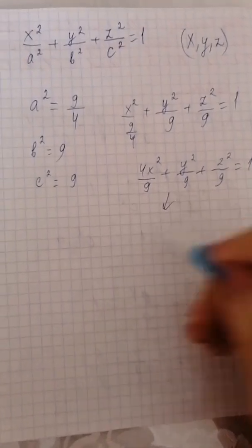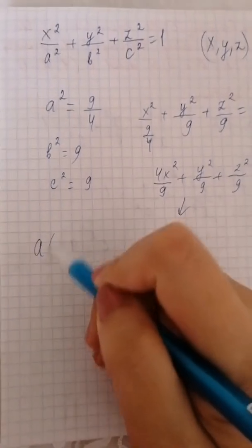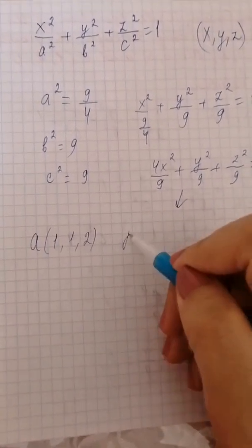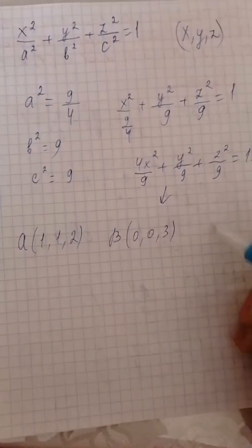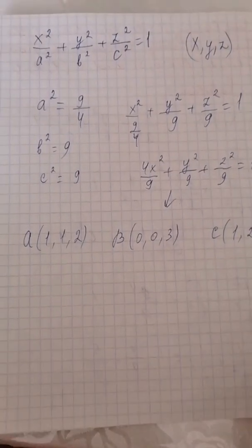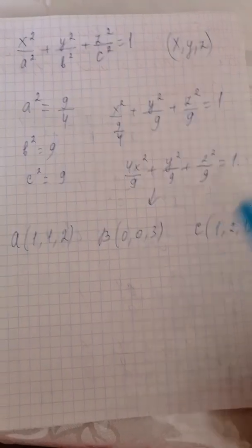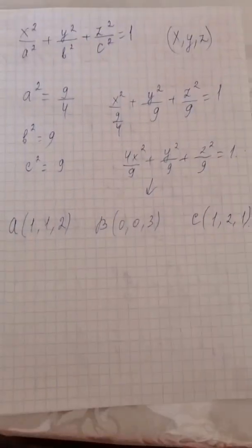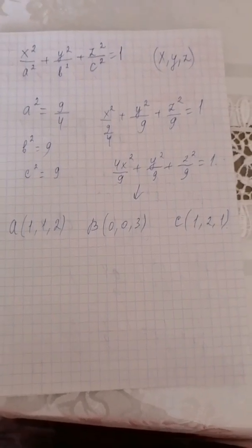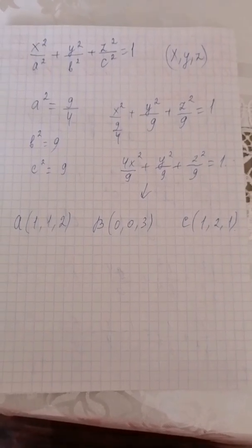This is the canonical equation of the ellipsoid passing through points A(1,1,2), B(0,0,3), and C(1,2,1). Thanks for watching my video. Please subscribe to my YouTube channel, like my videos, and leave a comment to support me. Thank you for watching.